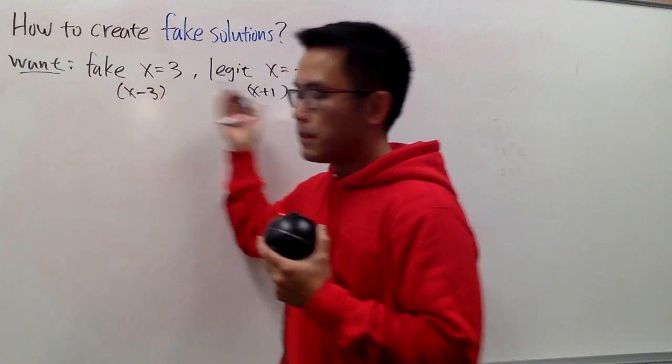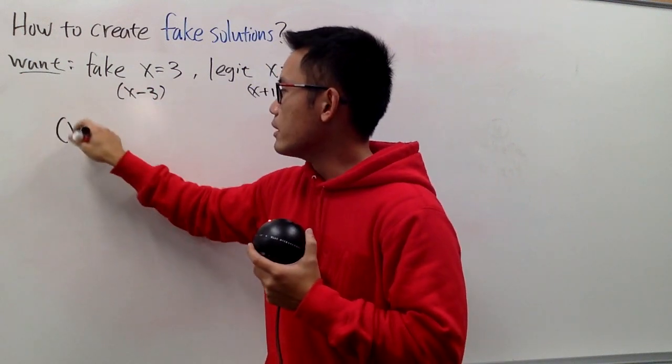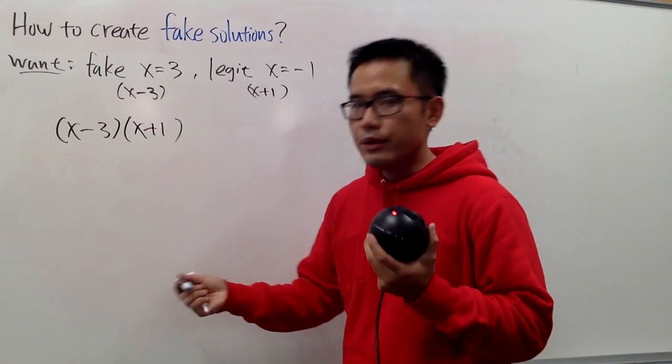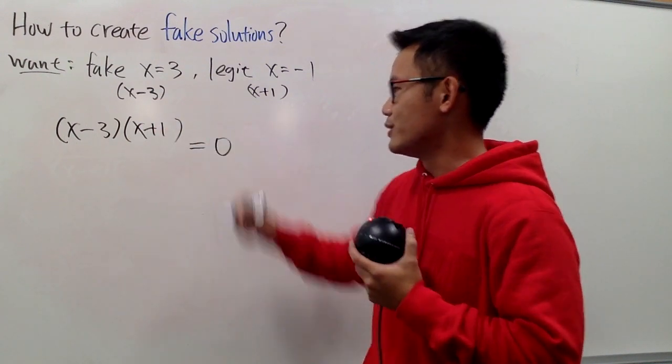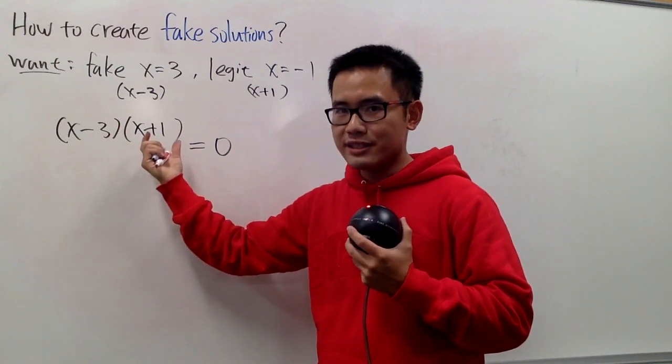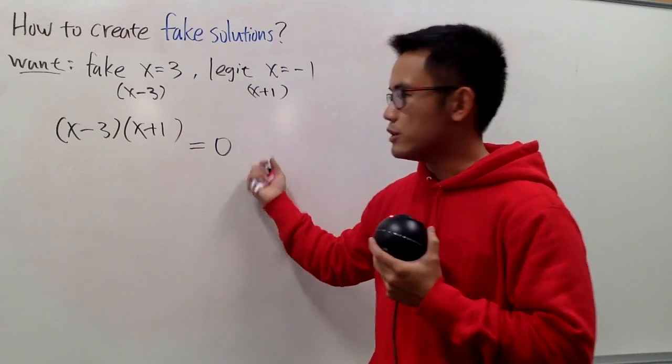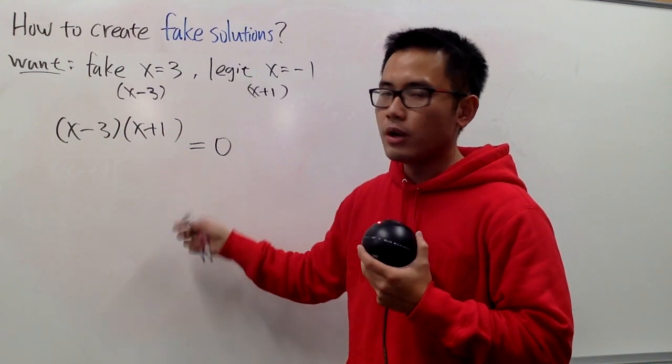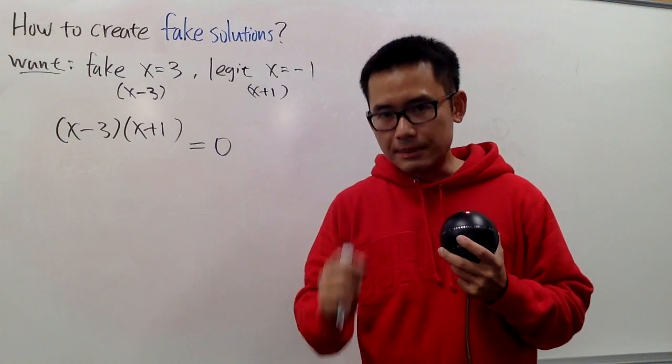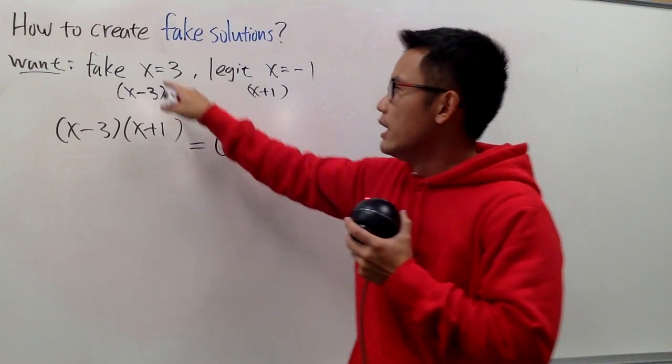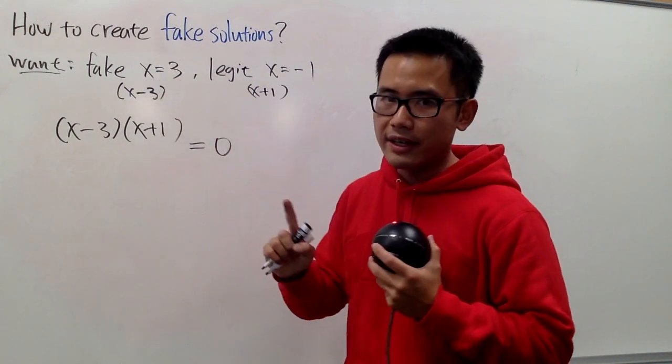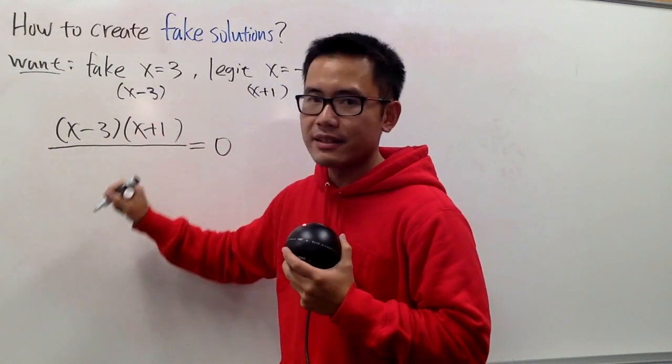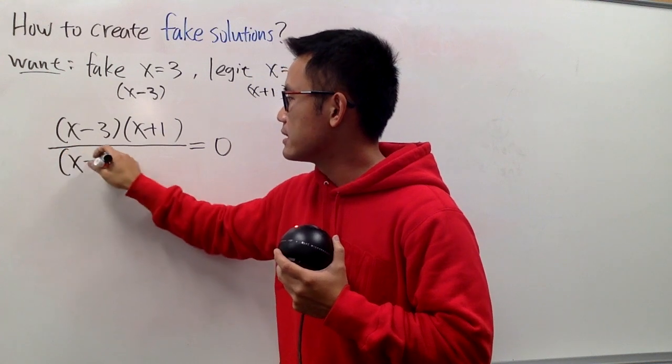First of all, we'll just multiply these two factors together, (x minus 3) times (x plus 1). And we have to make this equal to 0 because when we have a product of two things, two factors like this equal to 0, we set the first factor to be 0, likewise the second factor to be 0, and you end up with this and that. Here is the punchline. If you want x equals 3 to be fake, all you have to do is divide this by the same factor, so we just divide this by x minus 3.